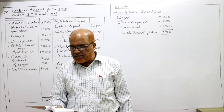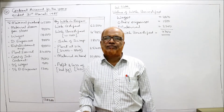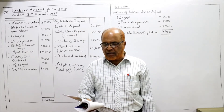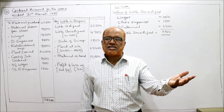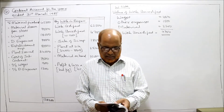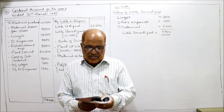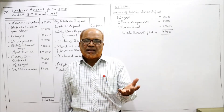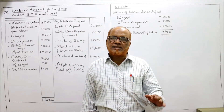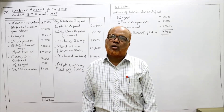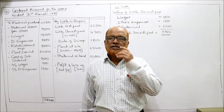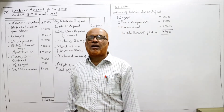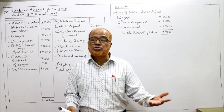Now see problem number 21. The following is a summary of entries in a contract ledger as on 31st March 1985 in respect of a contract. Prepare relevant accounts. Material purchased directly and material drawn from stores — both should be debited to the contract account. Wages and direct expenses — debit side. Establishment expenses and plant 34,000 — debit side. Scrap sold is an income and will be taken on the credit side of the contract account. Cost of subcontract — sometimes the main contractor subcontracts some work, so this expenditure goes on the debit side.